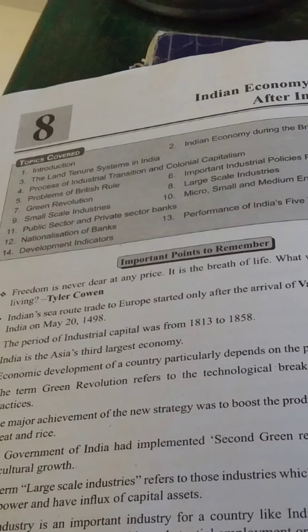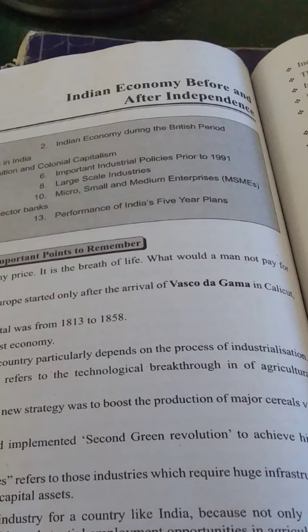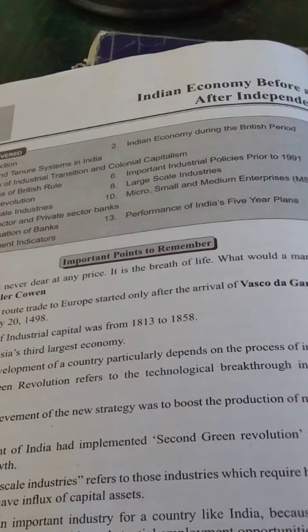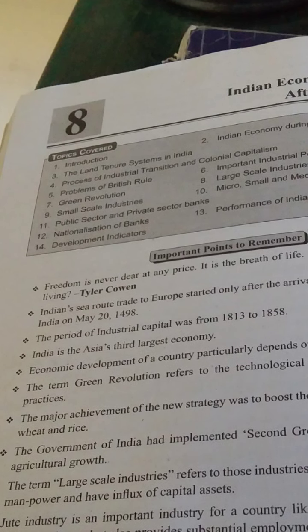The price of trade in Europe started only after the arrival of Vasco da Gama in Calicut, India, on May 1498. In 1498, Calicut is where Vasco da Gama arrived.